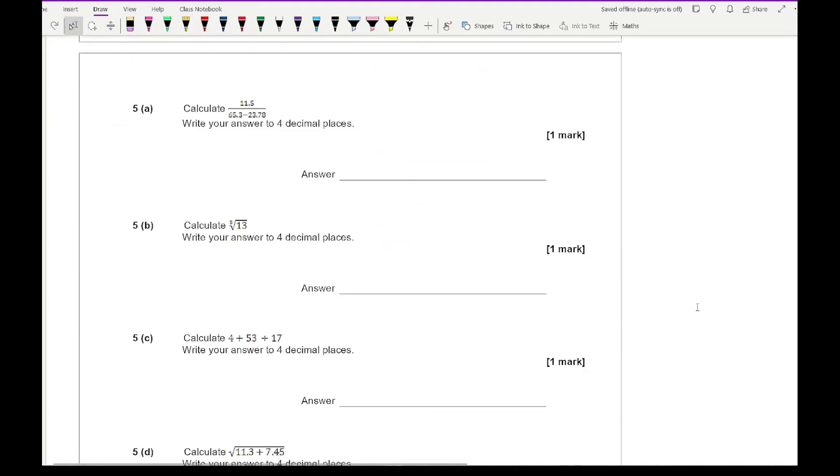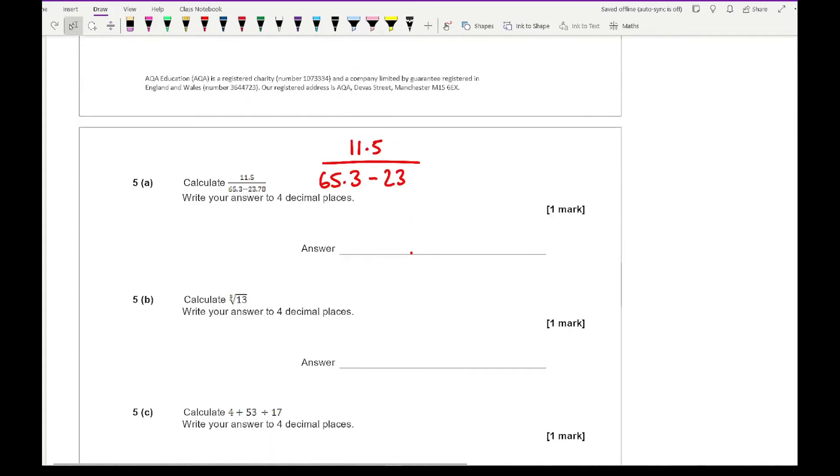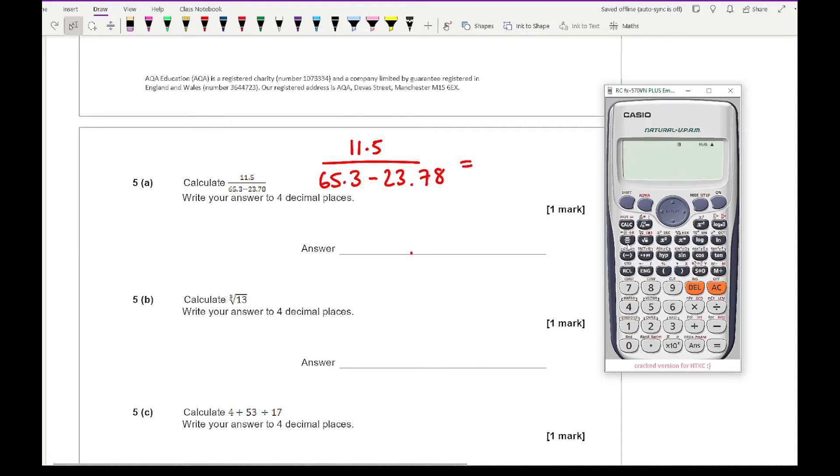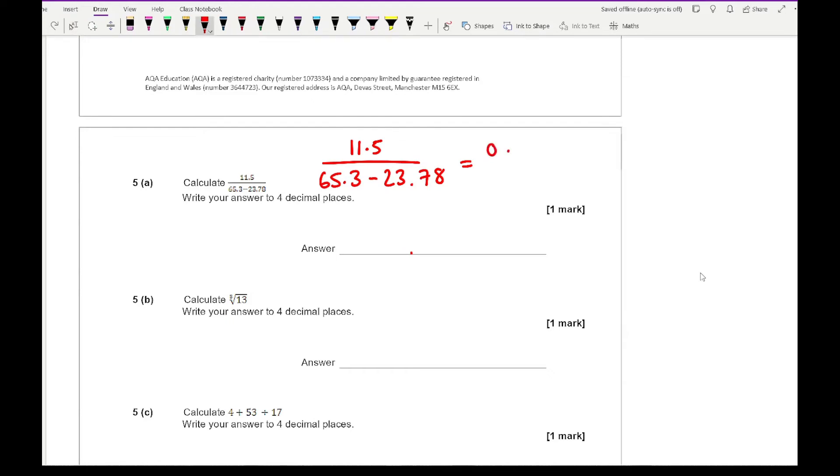Moving on to question 5. This question is going to be a bit difficult if you're reading off the screen. It's 11.5 over 65.3 minus 23.78. Let's type that in. It's really important you know how to enter these complex calculations on your calculator. That looks absolutely exact. Press the SD button and I get 0.2769749518. Rounding this to 4 decimal places gives 0.2770.